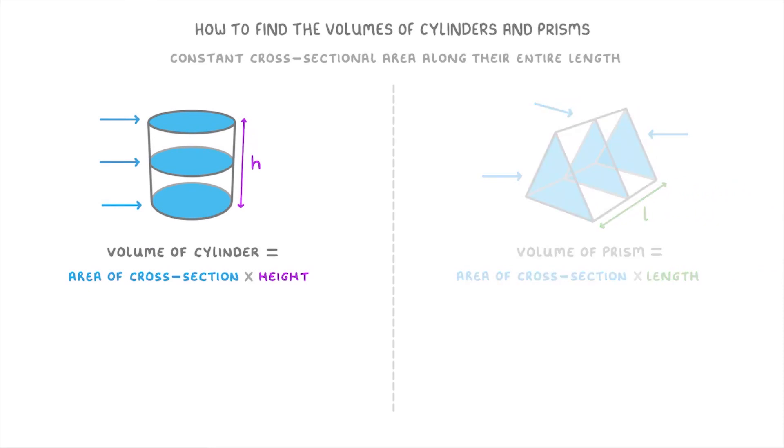So for our cylinder, which has a circle as the cross-section, the formula would be pi times radius squared, because that's the area of a circle, times the height. So if we write that as algebra, we can shorten the formula for cylinders as volume equals pi r squared h.